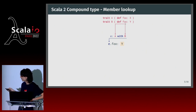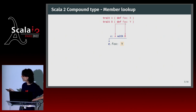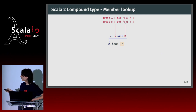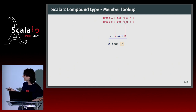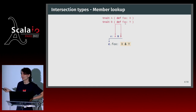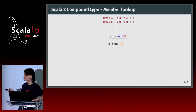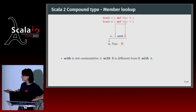In Scala 2, you'd write A with B and the difference is the last one wins. Because B comes after A, the type of e.foo is Y. This is a subtle difference that most of the time doesn't matter, but it's nicer in Scala 3 where the order doesn't matter, whereas in Scala 2, `with` is not commutative and order matters.